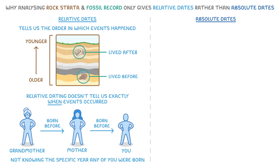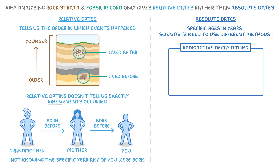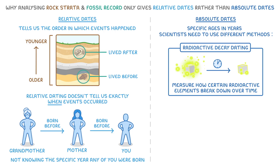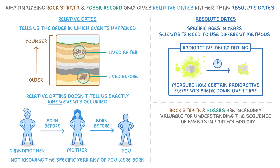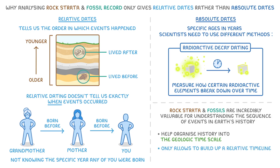To get absolute dates — which are specific ages and years — scientists need to use different methods instead. An example of these methods is radioactive decay dating, during which we measure how certain radioactive elements break down over time. So, to recap: rock strata and fossils are incredibly valuable for understanding the sequence of events in Earth's history, and they also help us to organize that history into the geologic timescale. However, they only allow us to build up a relative timeline, and don't give us absolute dates.